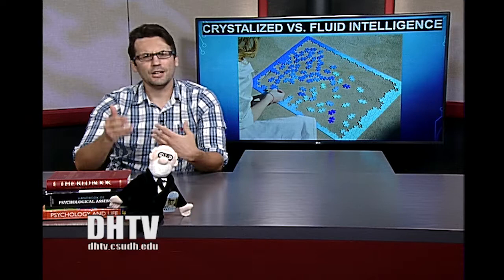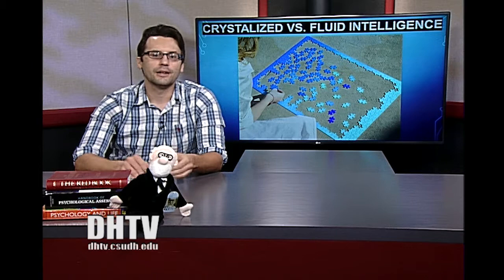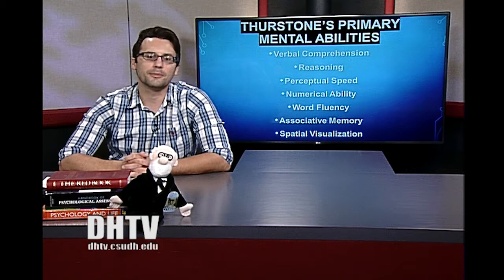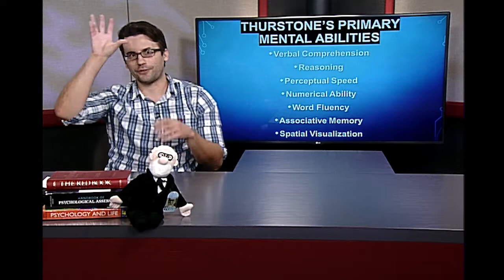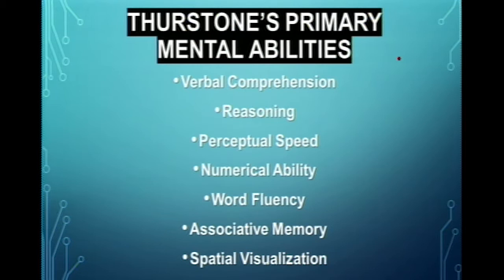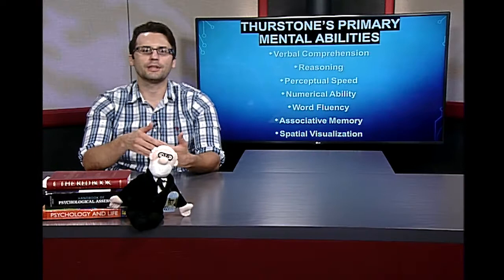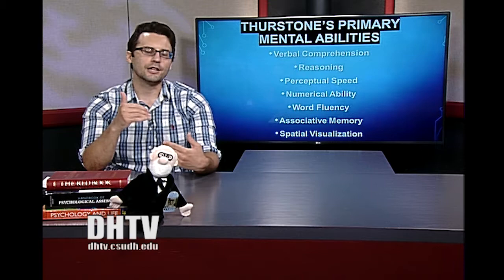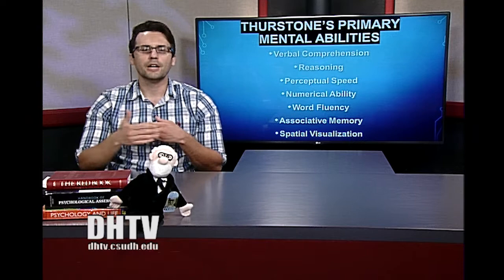Continuing with the idea of multiple intelligences, the next major theorist was Thurstone. He proposed that intelligence is derived from a series of primary mental abilities — it's not just a general intelligence factor, nor simply crystallized and fluid; it's multiple things. His primary mental abilities include verbal comprehension, reasoning, perceptual speed, numerical ability, word fluency, associative memory, and spatial visualization.